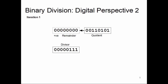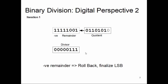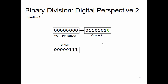For the 8-bit example, we load the divisor into a fixed register and keep it there. We deploy two registers — remainder and quotient — where the quotient register is loaded with the dividend bit pattern. We first do a left shift of both the remainder and quotient registers, then perform a subtraction between the 8-bit remainder register and the divisor register. If the result is negative, we roll back and finalize the LSB.